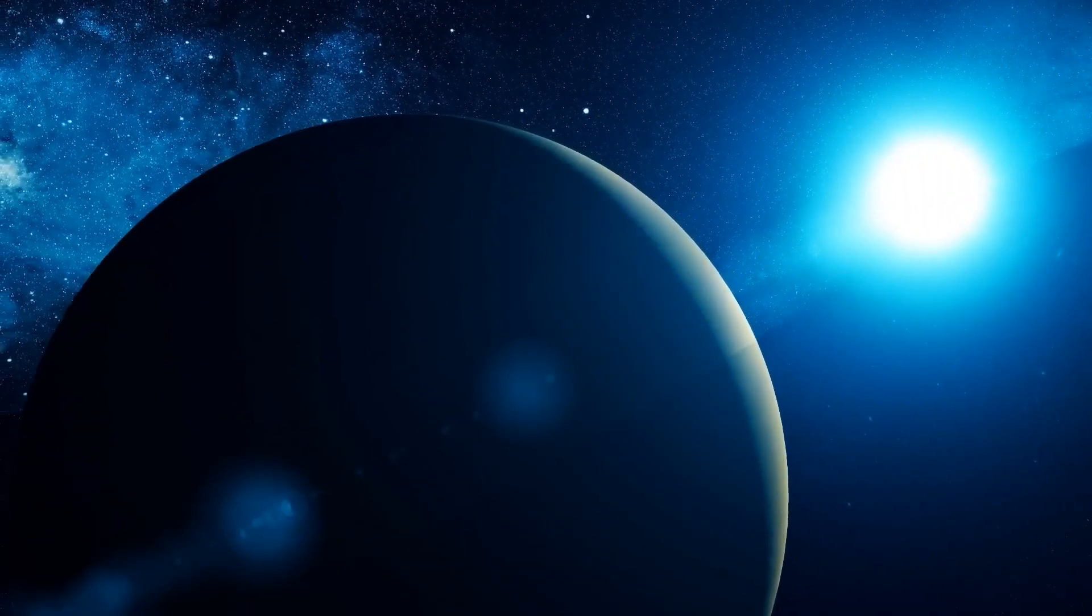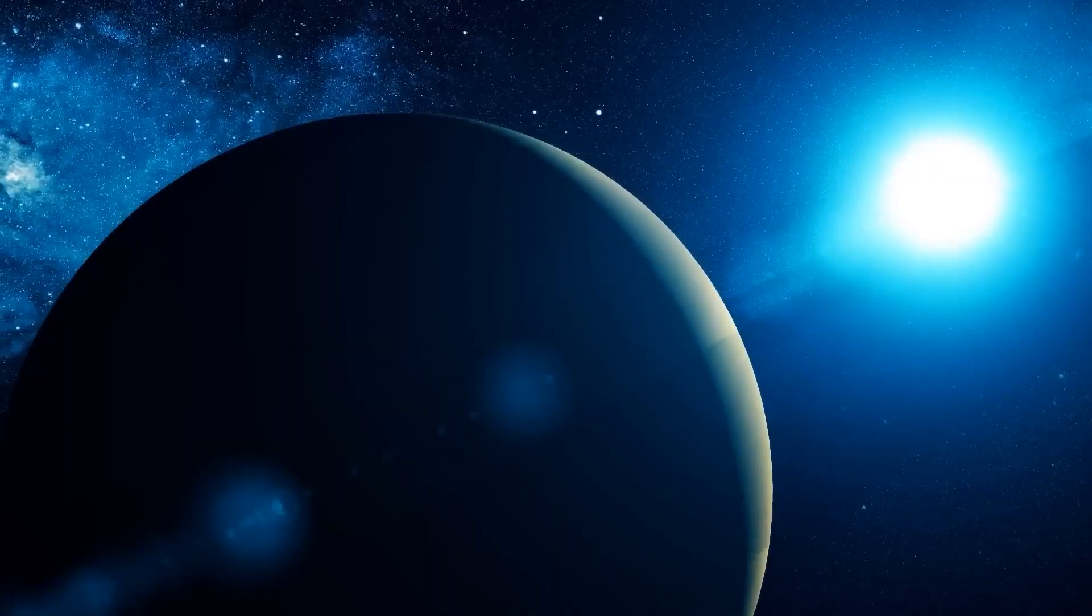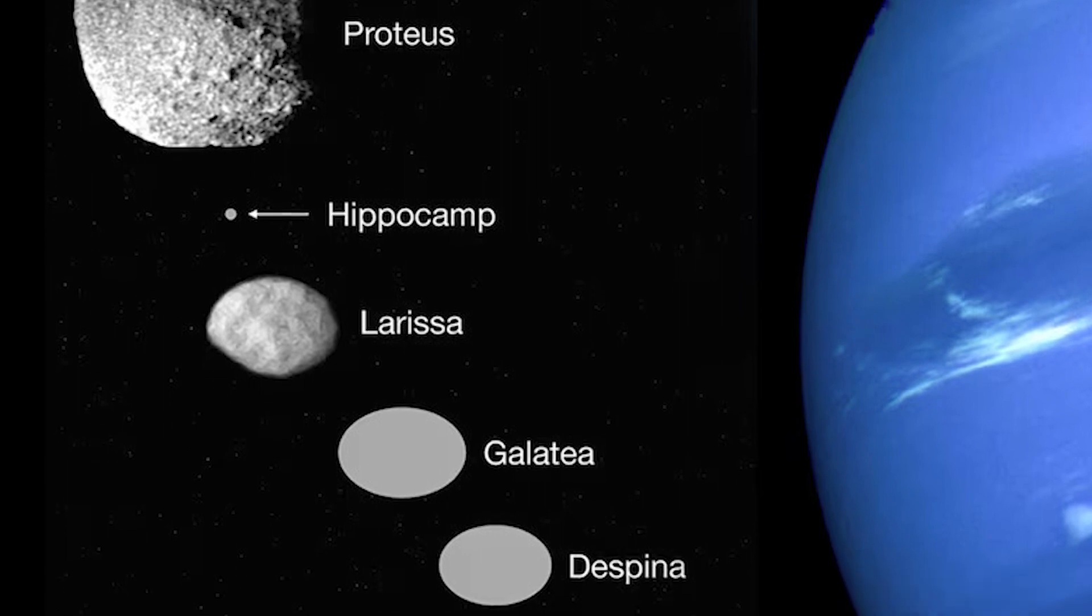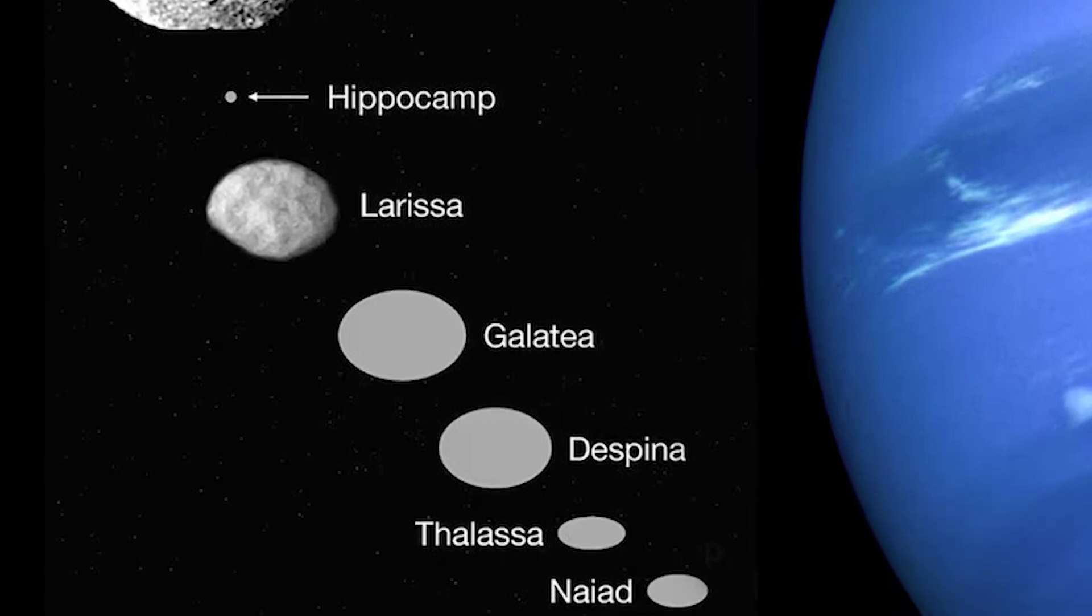Triton, Neptune's largest moon, is the large bright point of light with diffraction spikes that dominates the image. The image also shows seven of Neptune's 14 known moons surrounding the planet.